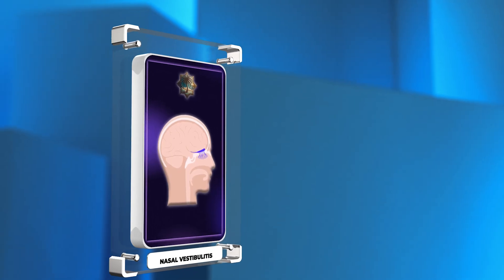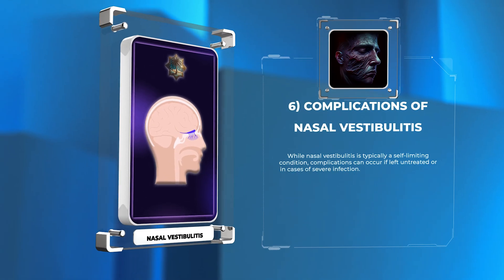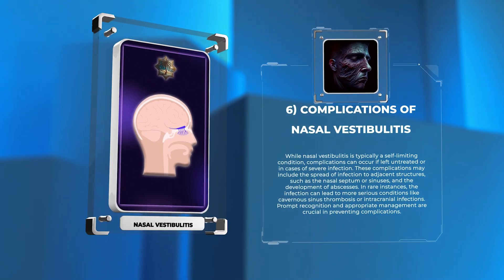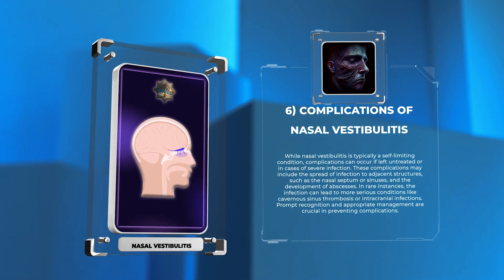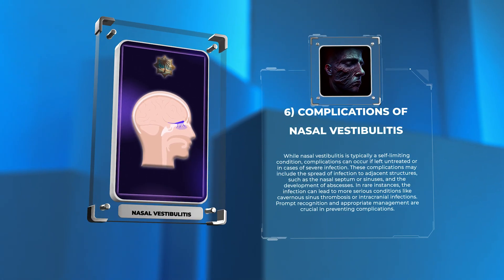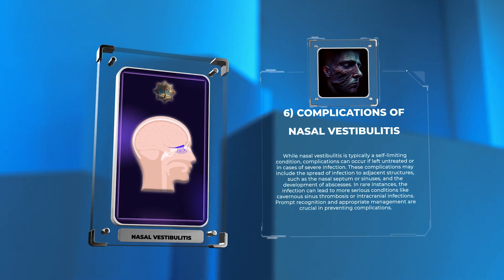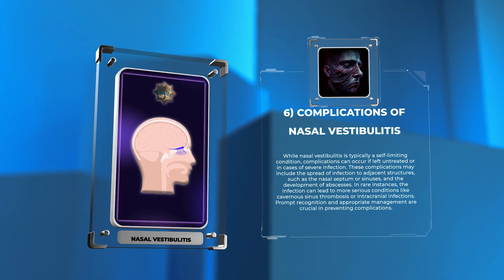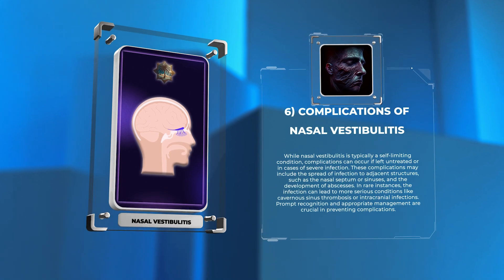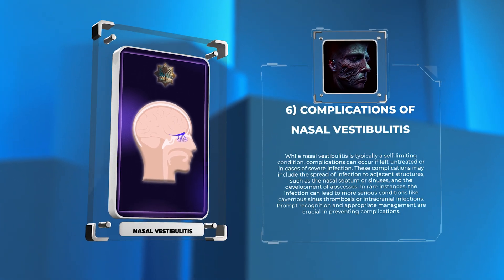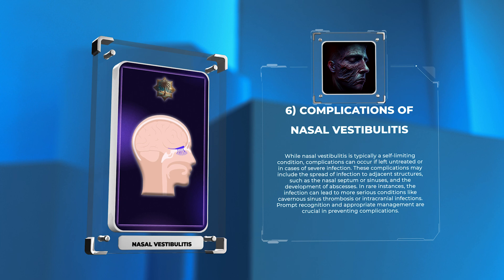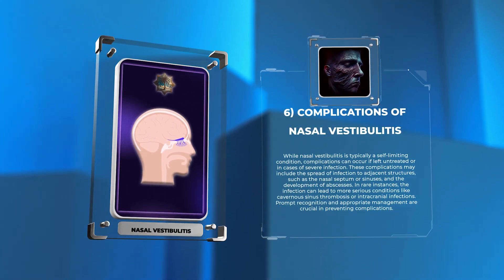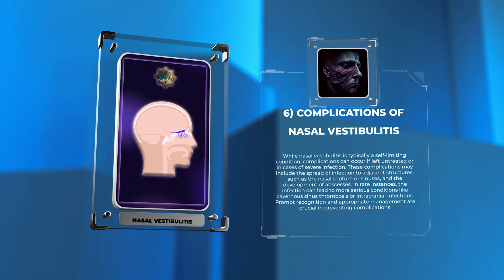While nasal vestibulitis is typically a self-limiting condition, complications can occur if left untreated or in cases of severe infection. These complications may include the spread of infection to adjacent structures, such as the nasal septum or sinuses, and the development of abscesses. In rare instances, the infection can lead to more serious conditions like cavernous sinus thrombosis or intracranial infections. Prompt recognition and appropriate management are crucial in preventing complications.